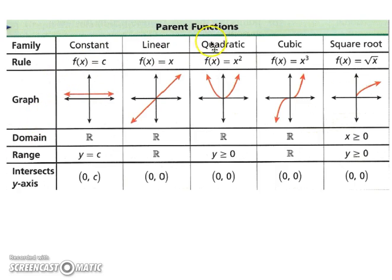These are examples of parent functions. A constant would be when y equals, say, 7. It's going to be a horizontal line at y is 7. A linear function is when f(x) equals x. A quadratic is when you have a parabola, so x squared. A cubic is when you have f(x) equals x to the third. And then you have a square root, which would be when f(x) equals the square root of x. There are others, but these are the most common.